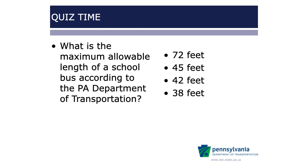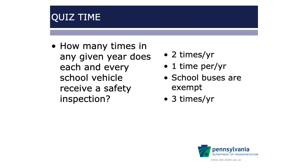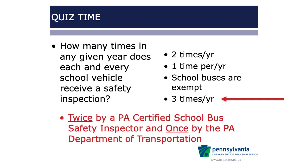What is the maximum allowable length of a school bus according to the Pennsylvania Department of Transportation — 72 feet, 45 feet, 42 feet, or 38 feet? The correct answer is 45 feet. How many times in any given year does each school vehicle receive a safety inspection? If it's a van, it receives two inspections. But school buses are actually inspected a third time, so the correct answer is three times a year — twice by a Pennsylvania-certified school bus safety inspector, and once by the Pennsylvania Department of Transportation.